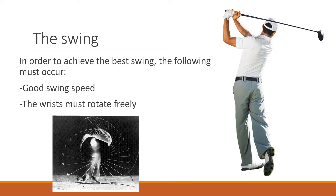The first thing we will look at is the swing. In order to achieve the best swing, two things must occur: you must have a good swing speed, and you must also allow the wrists to rotate freely. You can see in this picture at the bottom the path of the golf club, and you can see the importance of allowing the wrists to move freely — that's going to help hit the ball squarely. It's also important to note the follow-through; even after you hit the ball, it's still important to continue the swing.